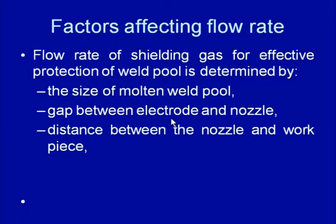If the gap between the electrode and nozzle is small, a lower flow rate is required. However, too small a gap can lead to excessive turbulence, which can reduce protection to the weld pool. The distance between the nozzle and the workpiece also matters — greater distance requires a higher flow rate for the desired shielding.